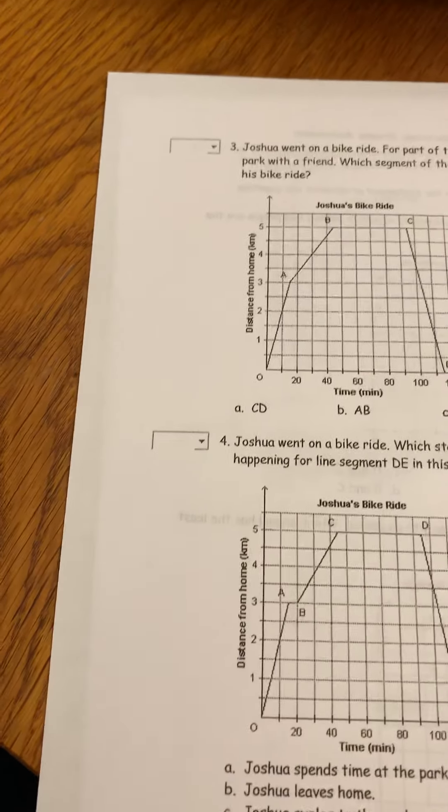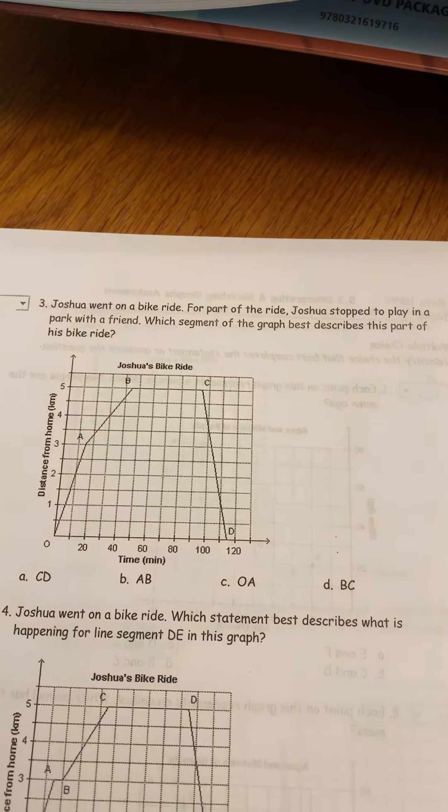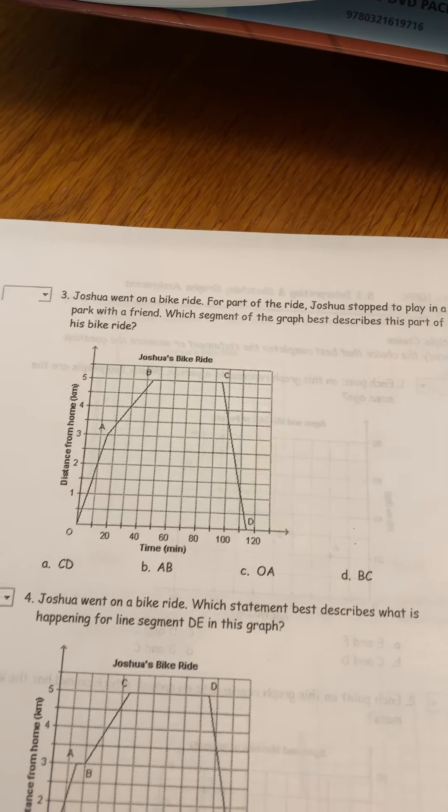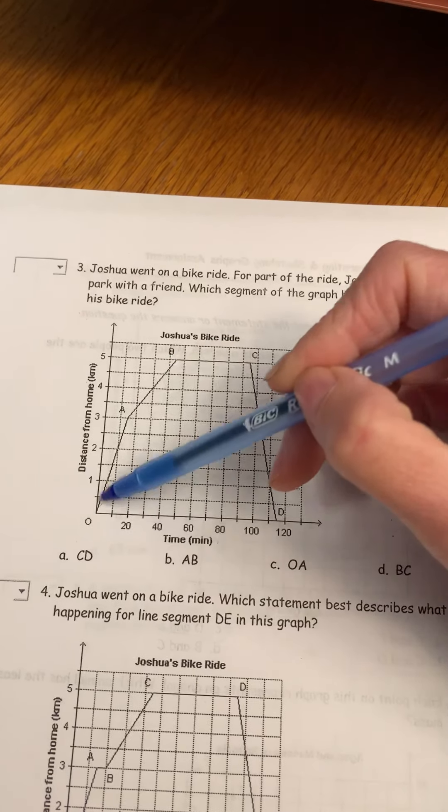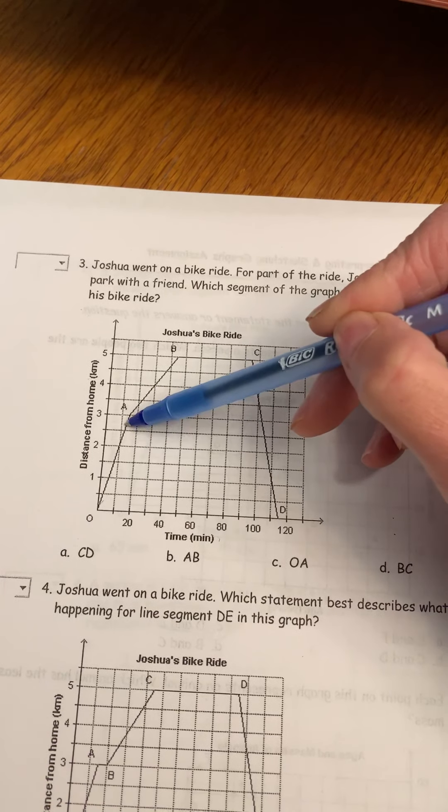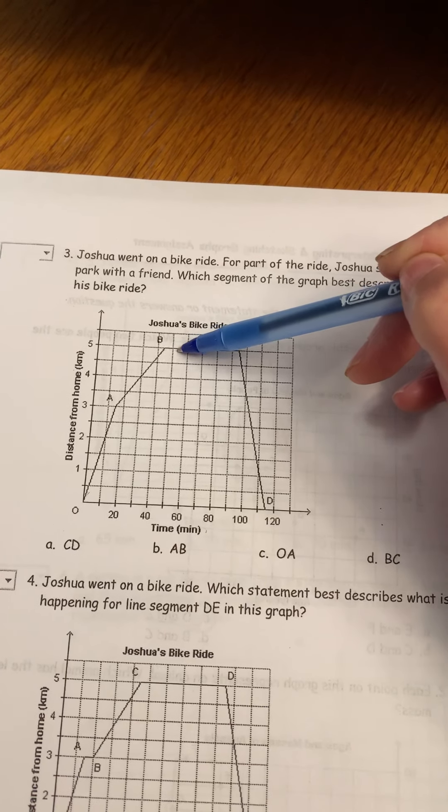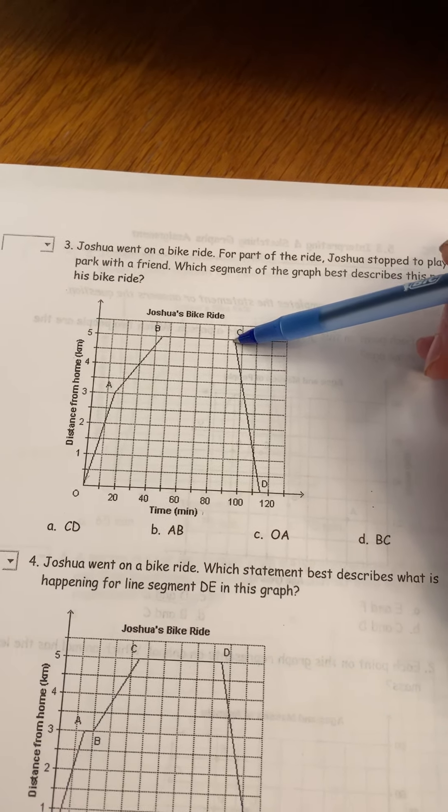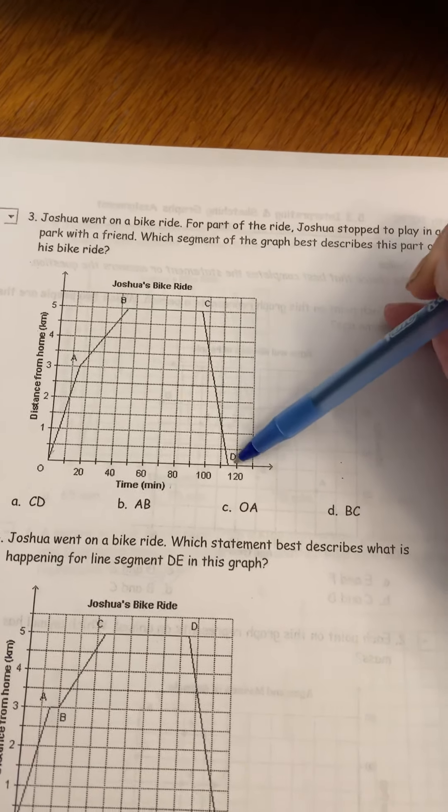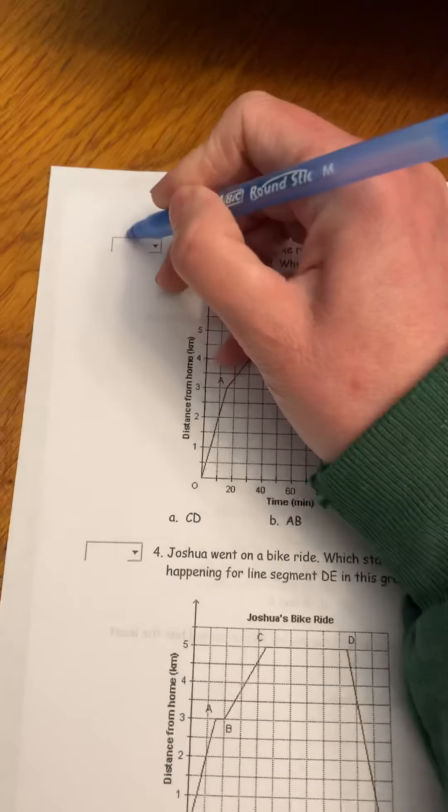Josh went for a bike ride. For part of the ride, Joshua stops to play with a friend. So distance from home and time. Here he's bike riding, you know this because he's getting further away from home. He's five kilometers away from home, but then this remains five kilometers. So that's obviously the point where he has stopped, and then he's returning home here. So B.C. should have been your answer there.